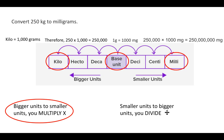An easier way to think about it: we started with 250 kilograms and moved all the way to milligrams. Count how many places you jump on the chart — 1, 2, 3, 4, 5, 6. So we just add six zeros to the end of 250, because we're multiplying by 10 each time. Add six zeros to your 250.